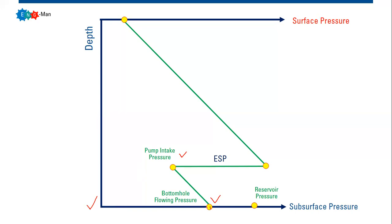At the pump intake, we meet the ESP — the electrical submersible pump. The pump increases the pressure, so we move from pump intake pressure to pump discharge pressure. The pump discharge pressure can be significantly higher than the reservoir pressure, because the pump pressurizes the fluid through its mechanical work.